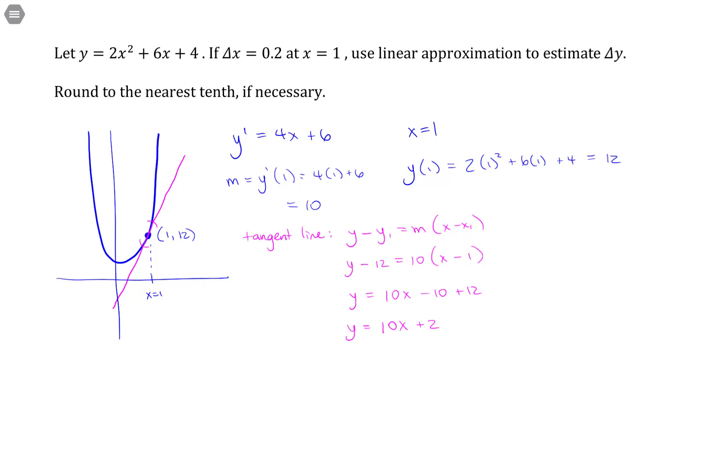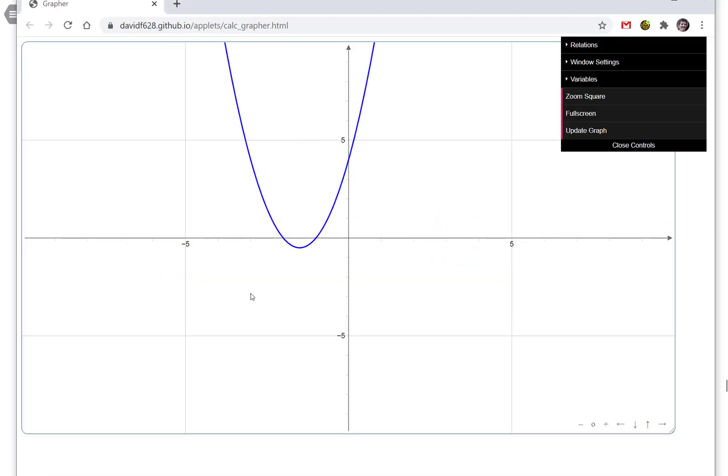Alright, so now I have the function that I'm working with and I have the tangent line that approximates. So let me make sure we get a good picture of this. I'll graph it online so that we get a good picture of this. Alright, so I've already graphed the original function here.